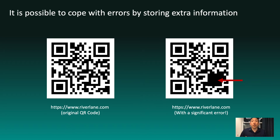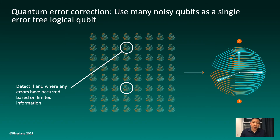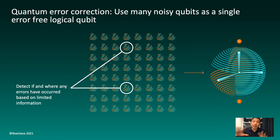This is very useful for QR codes because in the real world, parts of the code might get damaged, faded, or covered up. You'll also notice that the extra information doesn't necessarily have to be a copy — the part of the QR code that got covered up isn't repeated anywhere else. Quantum error correction works in a similar way. In quantum error correction, we use many noisy physical qubits to build one reliable, error-free logical qubit. If one of these noisy qubits suffers from an error, we can use the remaining qubits to detect and correct the error.